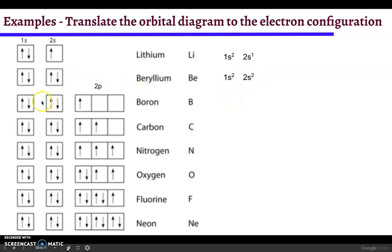For boron we're going to need to add a third orbital, the 2p orbital. So we're going to write 1s2 2s2, and then 2p. Since there's one electron in there we write it as 2p1.